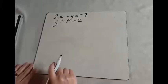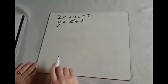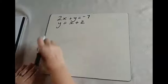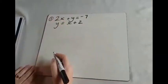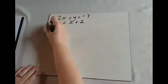I've written two equations here. The first thing you do is you number them. So 2x plus y equals negative 7 is number 1 and y equals x plus 2 is number 2.